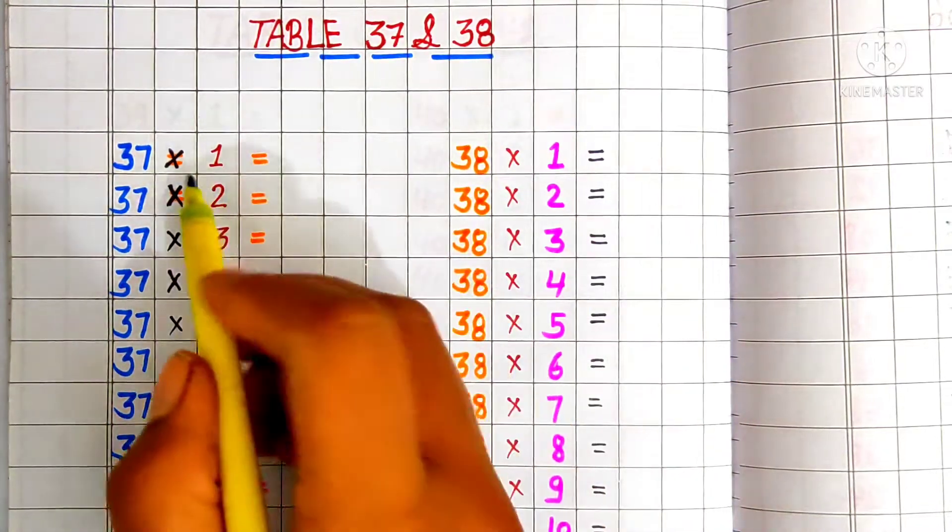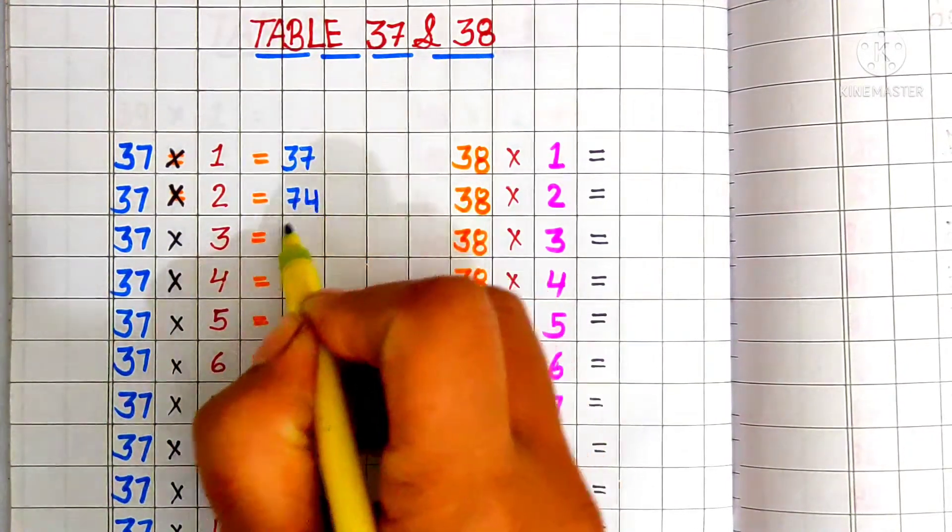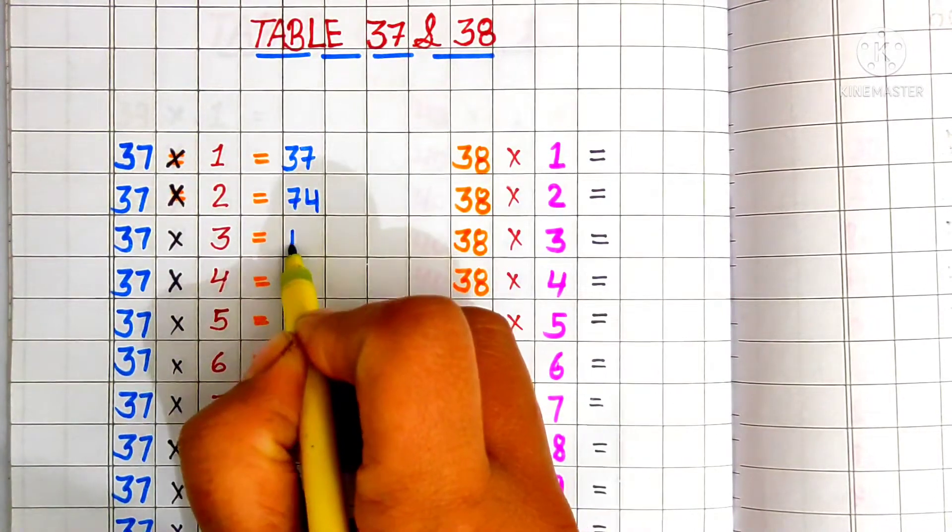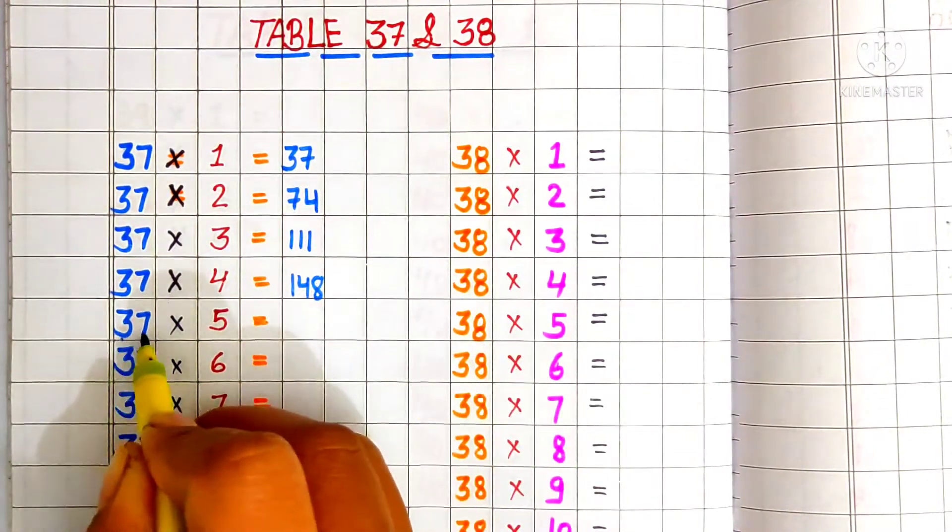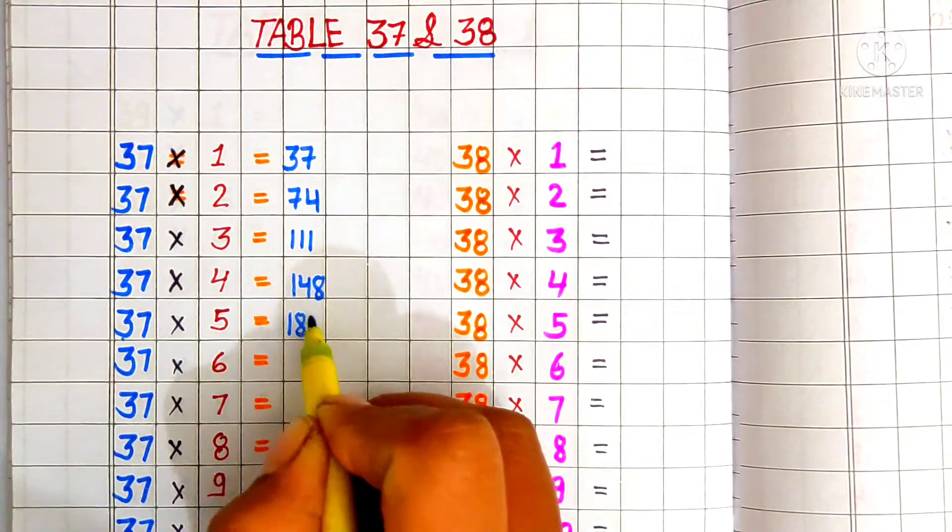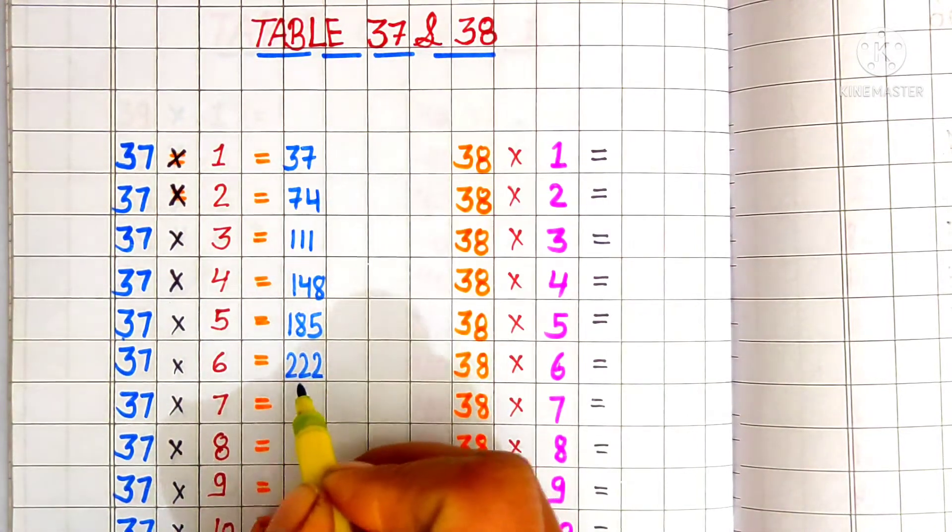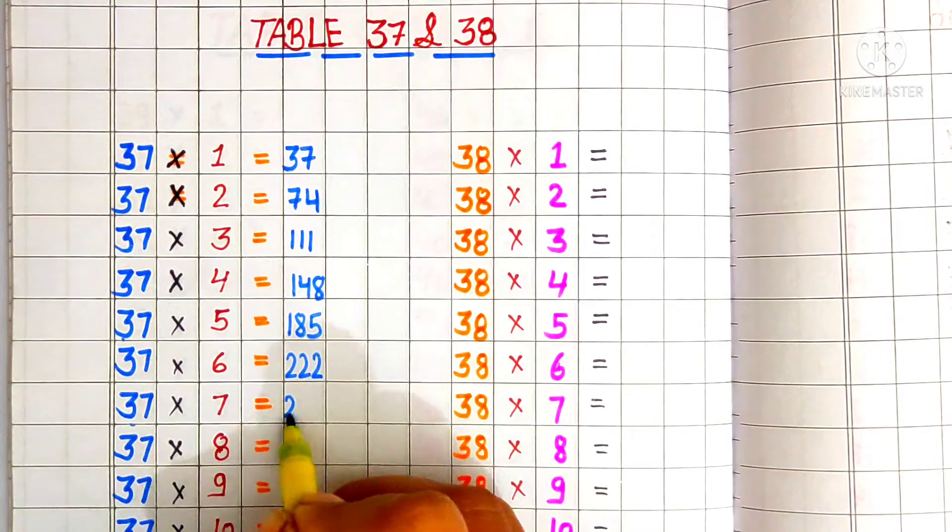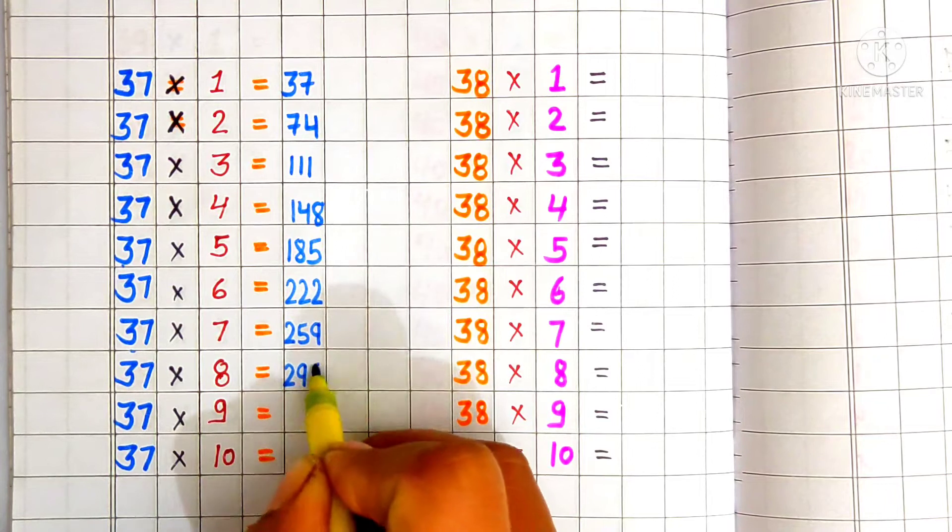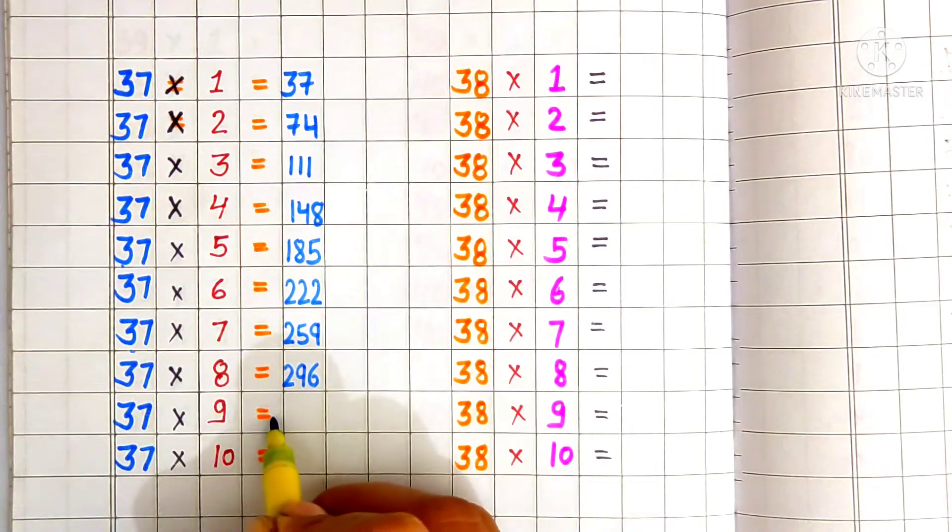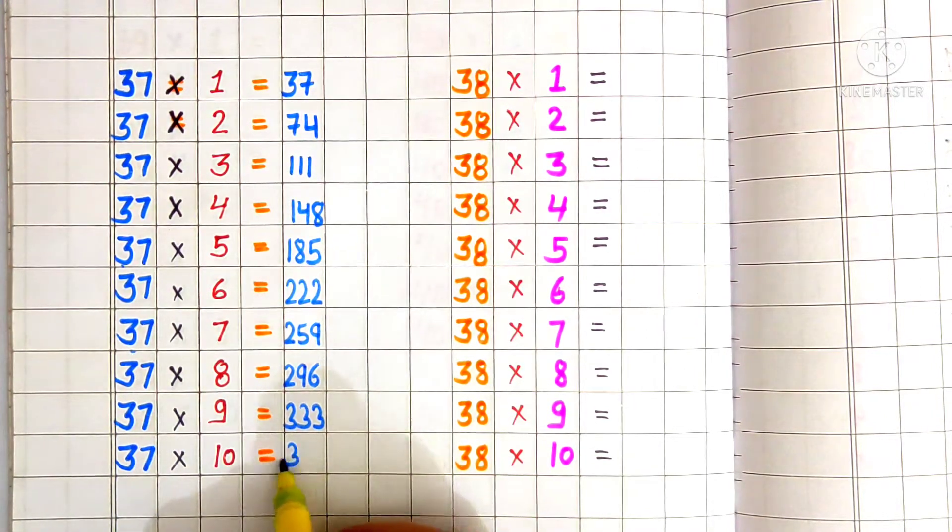Let's start this video. 37 ones are 37. 37 twos are 74. 37 threes are 111. 37 fours are 148. 37 fives are 185. 37 sixes are 222. 37 sevens are 259. 37 eights are 296. 37 nines are 333. 37 tens are 370.